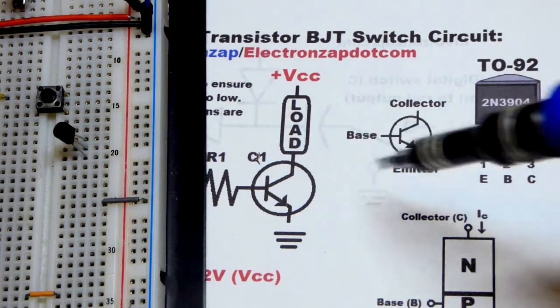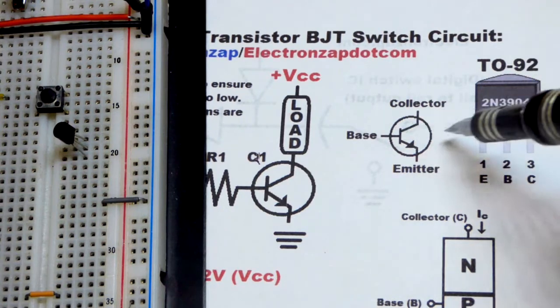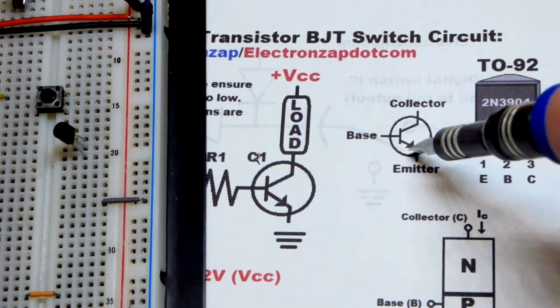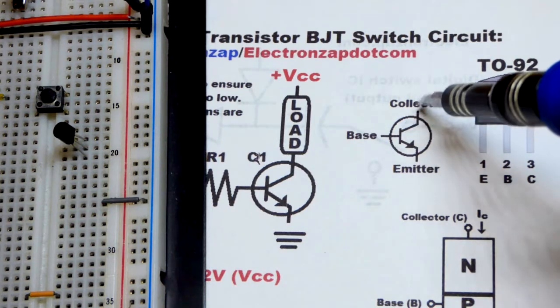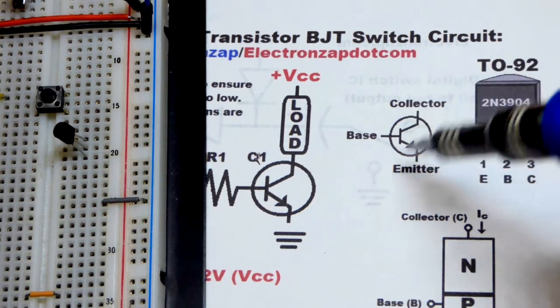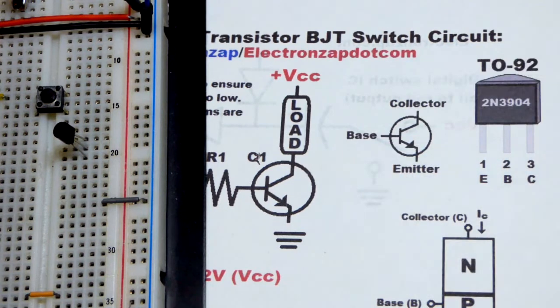The emitter is the one with the arrow. The base has this dash to the side and a line that comes out. The main thing is the arrow is the emitter, and the other line without an arrow is the collector. The line attached to the bar is the base.